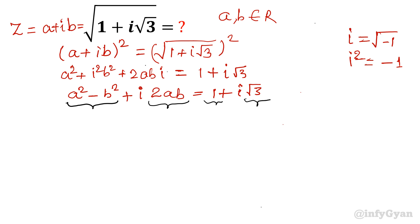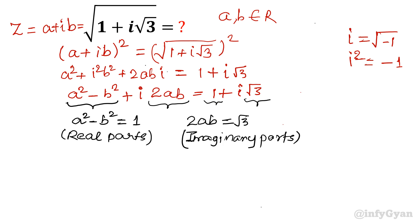So after equating, a squared minus b squared equals 1 from the real parts, and 2ab equals root 3 from the imaginary part. Now I am not going to solve by algebraic method. I am going to calculate the value of b from the second equation. Dividing both sides by 2a, b will be root 3 over 2a.